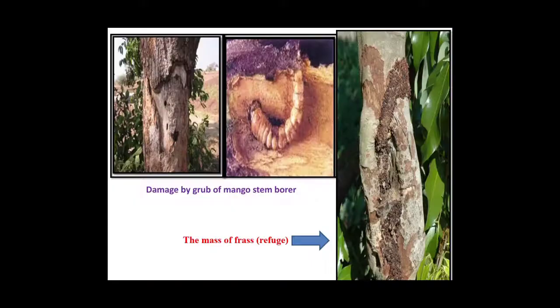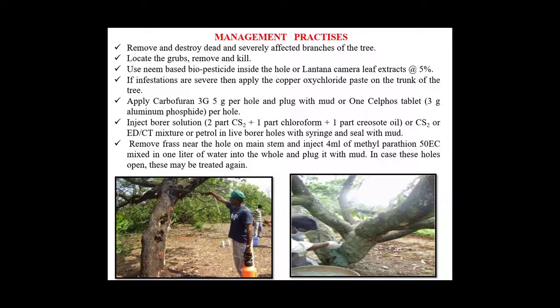Management practices for mango stem borer: remove and destroy dead and severely affected branches. Locate grubs, remove and kill them. Use neem-based biopesticide inside the hole, or use Lantana camara leaf extract 5%. If infestation is severe, apply copper oxychloride paste on the trunk. Apply carbofuran 3g–5g per hole and plug the hole with mud. Use phostoxin tablet per hole, inject borhole solution, and inject 4 ml of methyl parathion into the stem.